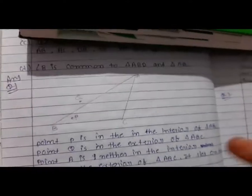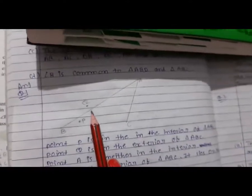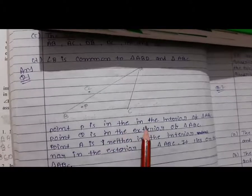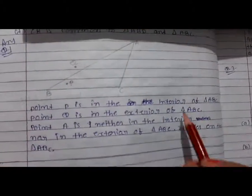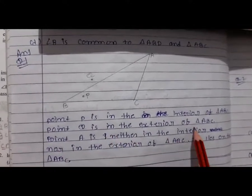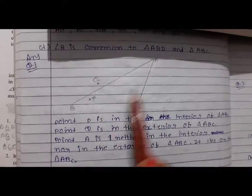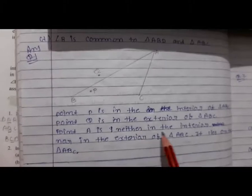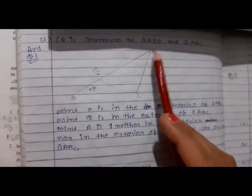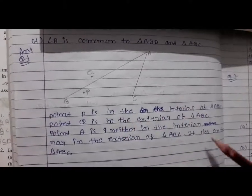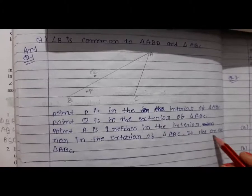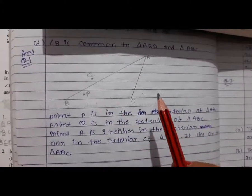So, we have triangle ABC drawn here. Point P is in the interior of triangle ABC. Point Q is in the exterior of triangle ABC. Point A is neither in the interior nor in the exterior of triangle ABC — it lies on triangle ABC.